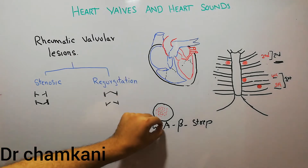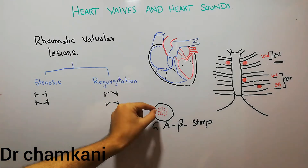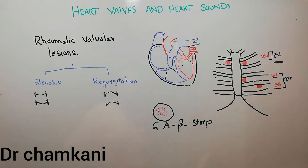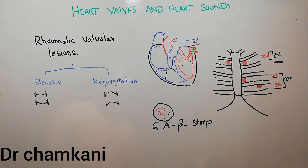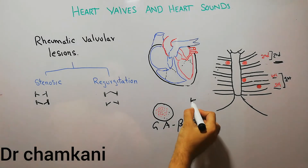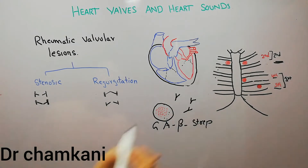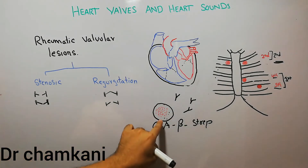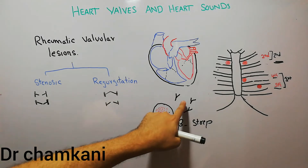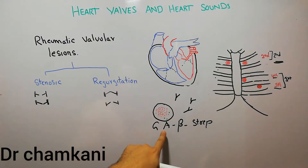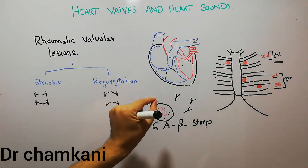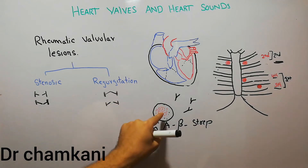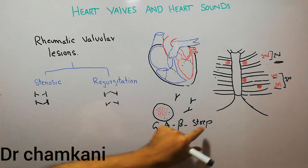These bacteria infect the human body and most of the time they will cause a sore throat or scarlet fever. In response to these bacteria, the human body will make some antibodies. These antibodies are formed against the bacteria, and when they start reacting against group A beta-hemolytic streptococci, they act against certain proteins present in the structure of these bacteria.